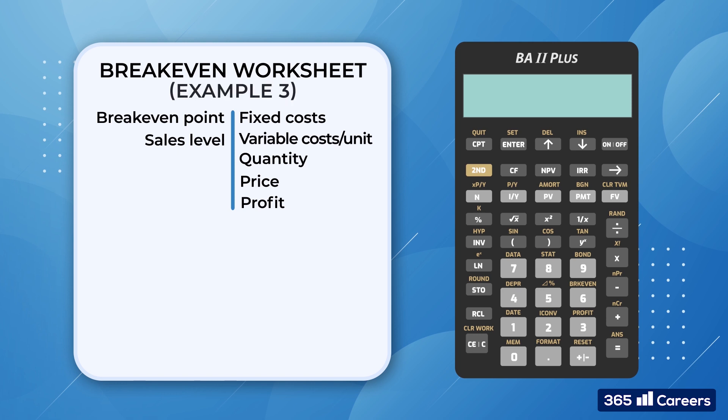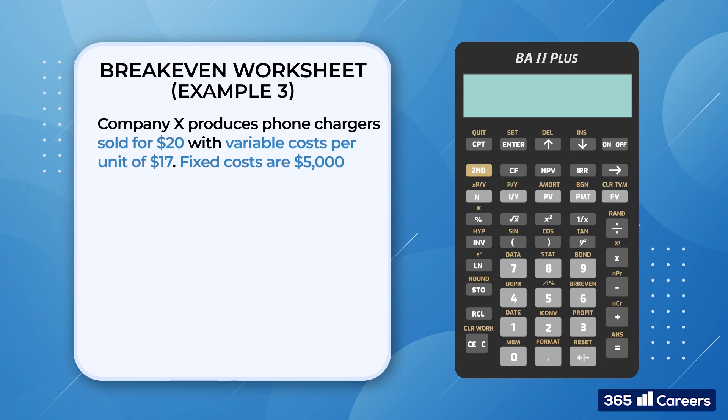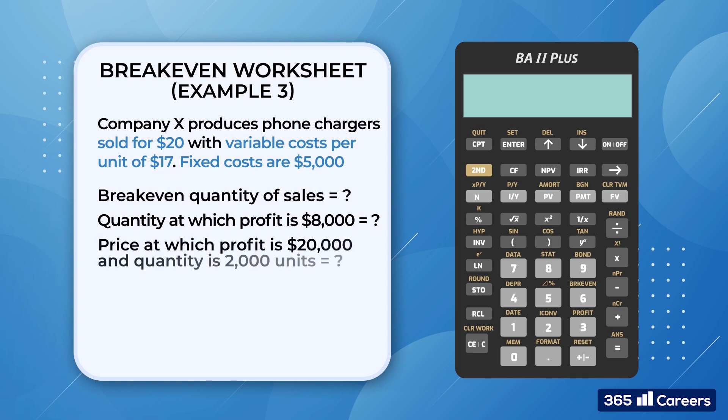Let's provide an example. Imagine that company X produces phone chargers, which are then sold for $20 each. The variable costs per unit are $17, while the fixed costs are $5,000. We would like to calculate three unknowns. The break-even quantity of sales, the quantity that would result in a profit of $8,000, and the sales price, which will turn to a profit of $20,000, provided that the volume of sales is 2,000 units.